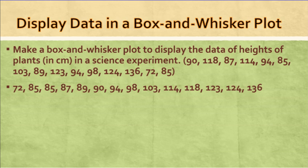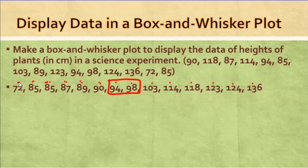Since we have an even number, we're going to have two middle numbers — the seventh and eighth numbers. Between those two numbers is our median. I have six numbers on each side, confirming an even split. Since I have 94 and 98, I add those two together and divide by two — the median is 96. That's the halfway point.